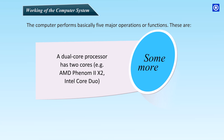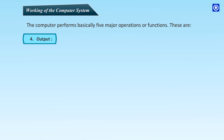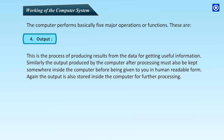A dual-core processor has two cores — for example, AMD Phenom 2X2 and Intel Core Duo. Fourth, output. This is the process of producing results from the data for getting useful information. The output produced by the computer after processing must also be kept somewhere inside the computer before being given to you in human-readable form. The output is also stored inside the computer for further processing.